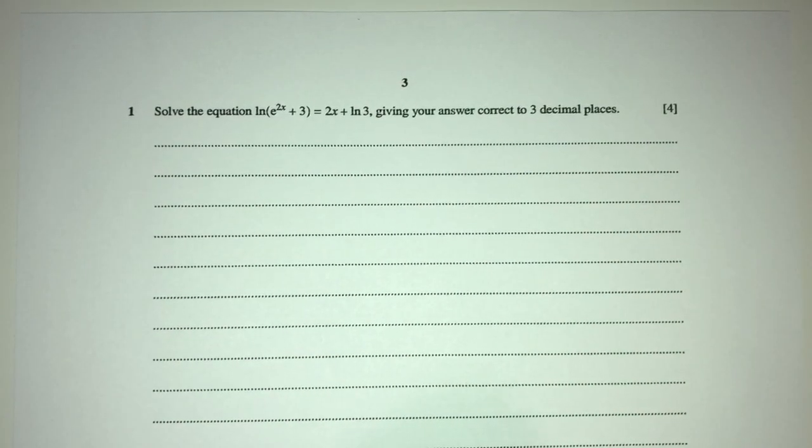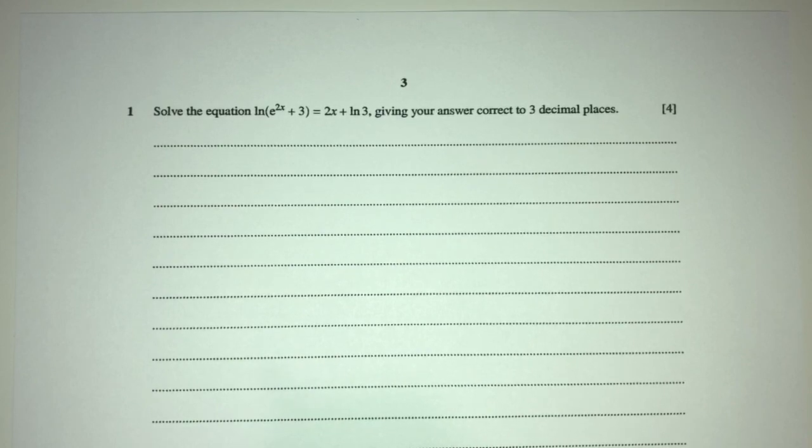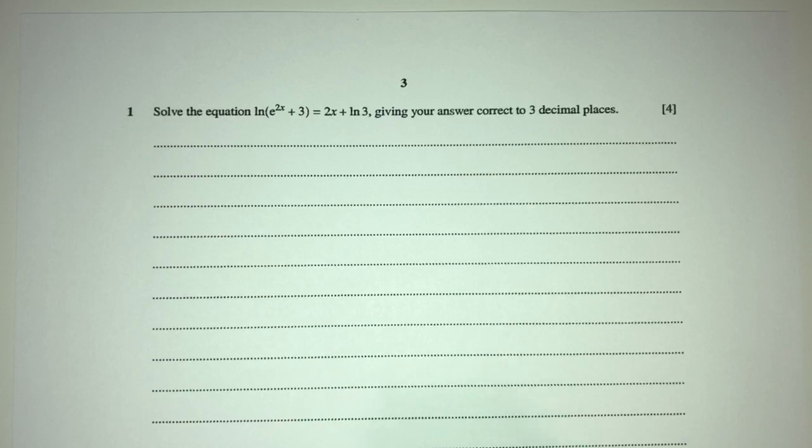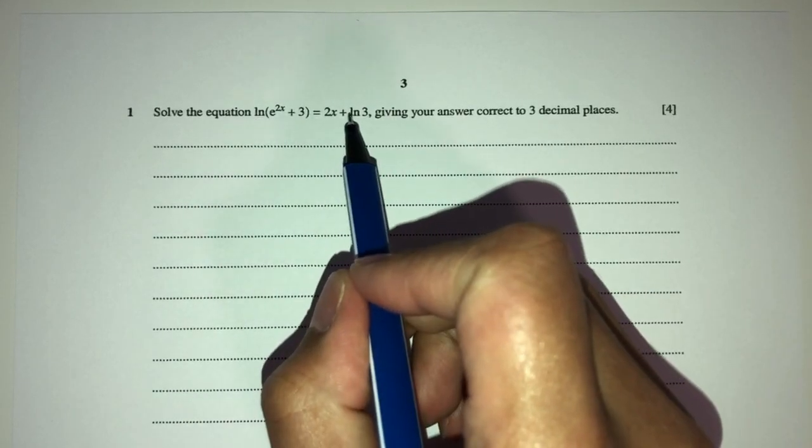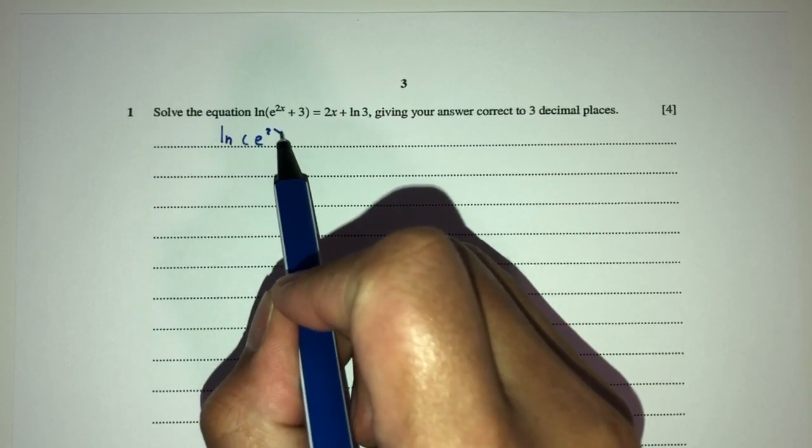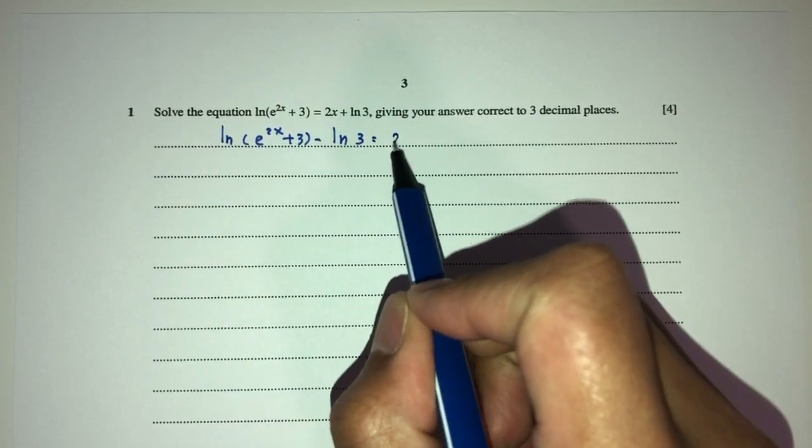Question number one. Here we have to solve the equation, giving your answer to three decimal places. Now, solving means finding the unknown, finding the value of x. So let's solve this one by one. Here we have ln, here we have ln. We can send this to one side. You'll have ln exponential 2x plus 3, minus ln of 3 is equal to 2x.